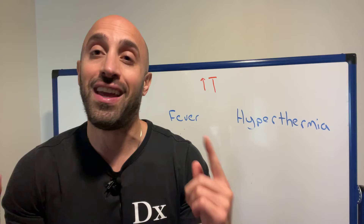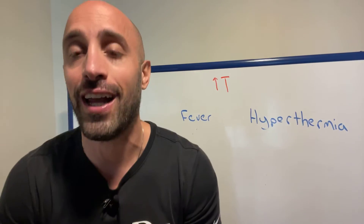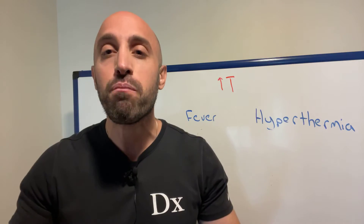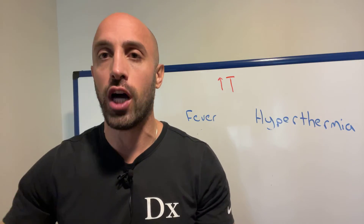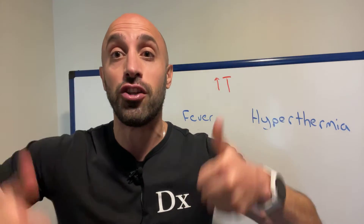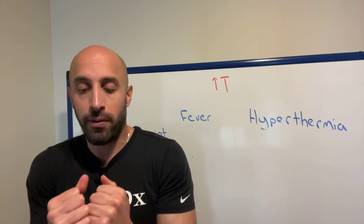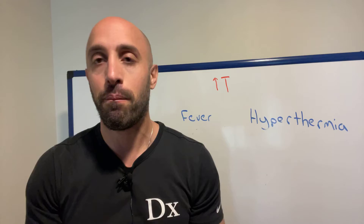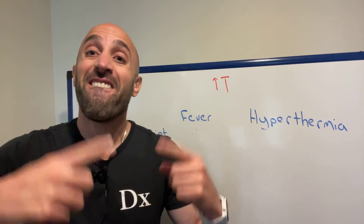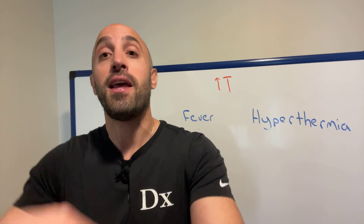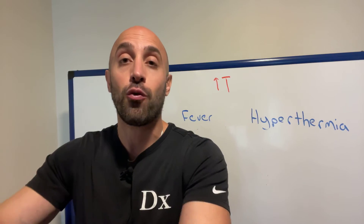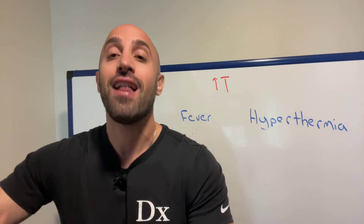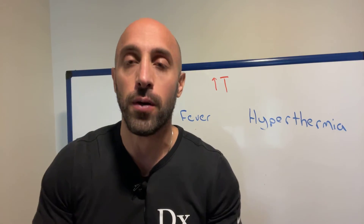So now the temperature set point in the hypothalamus is, let's say, 39. At 37, you're going to feel cold. Now you've got to increase heat production and decrease heat loss. You start shaking, increase metabolism, go under blankets, vasoconstrict, and all of a sudden you're at the new temperature set point. Because fever is due to inflammation through activation of the COX pathway, fever responds to antipyretics like NSAIDs and Tylenol.